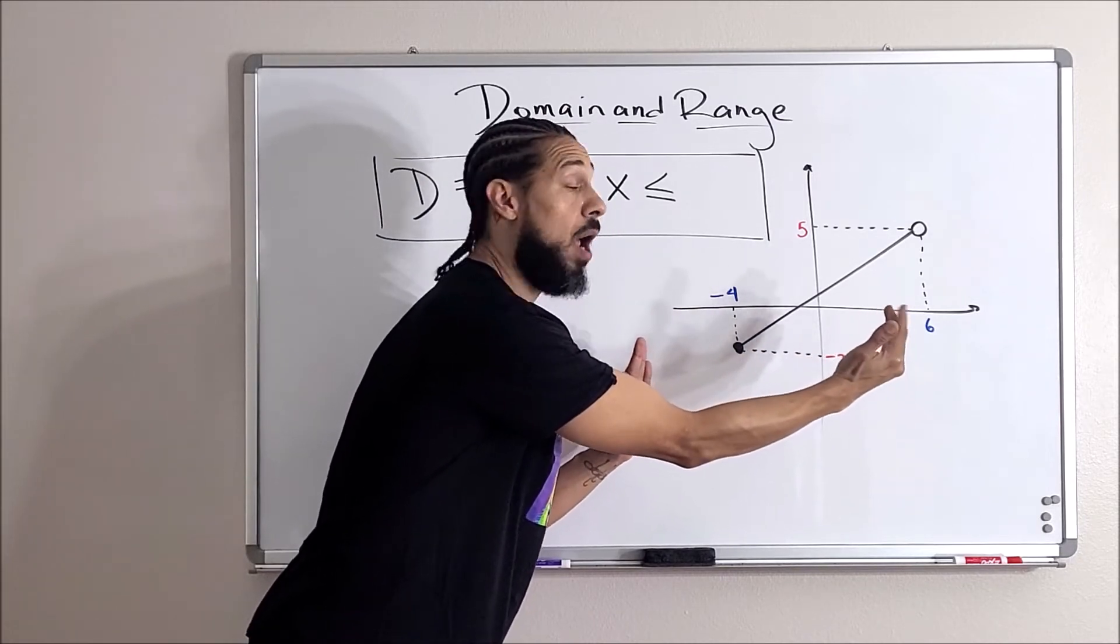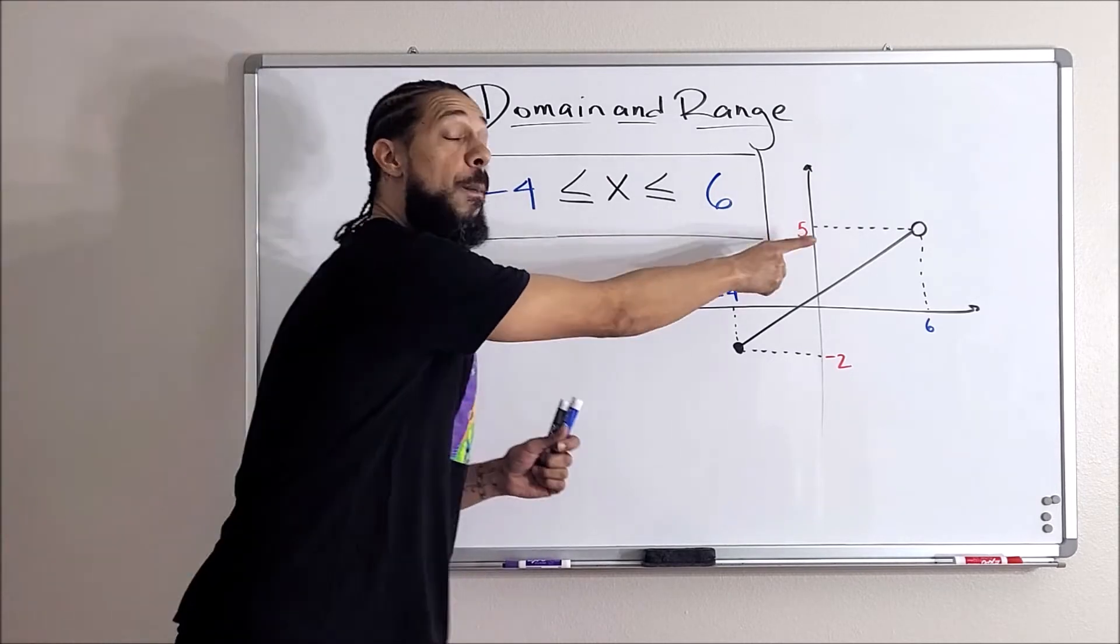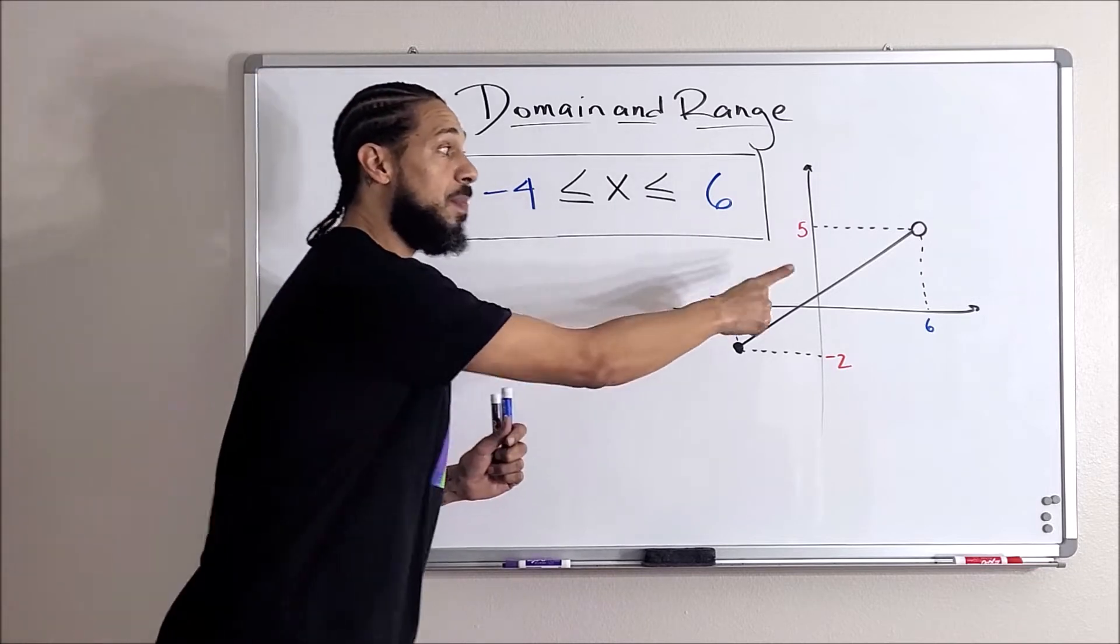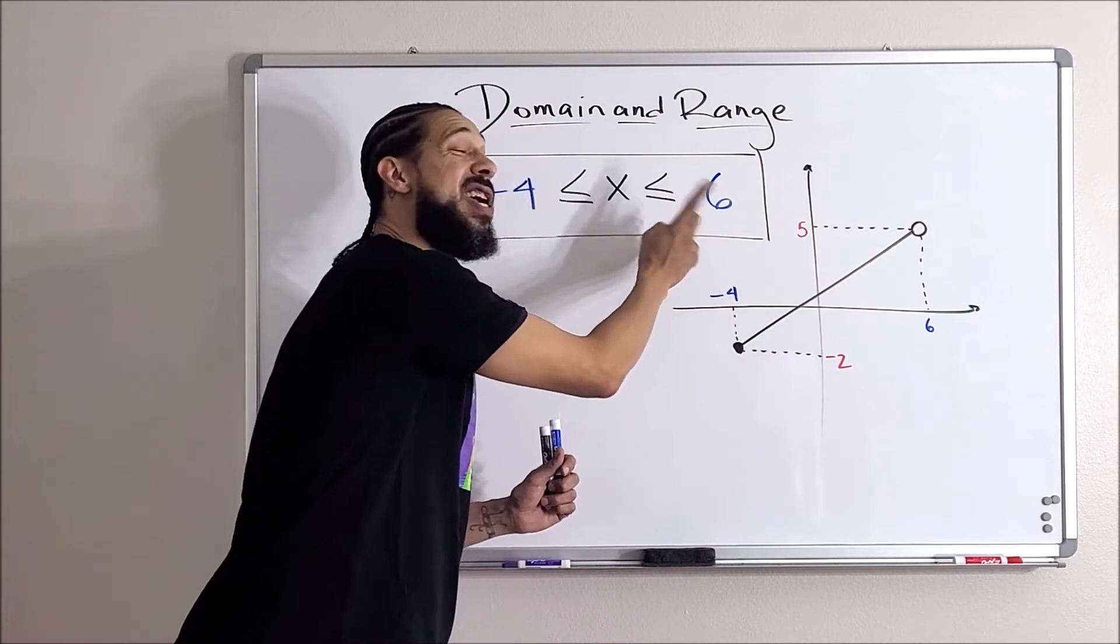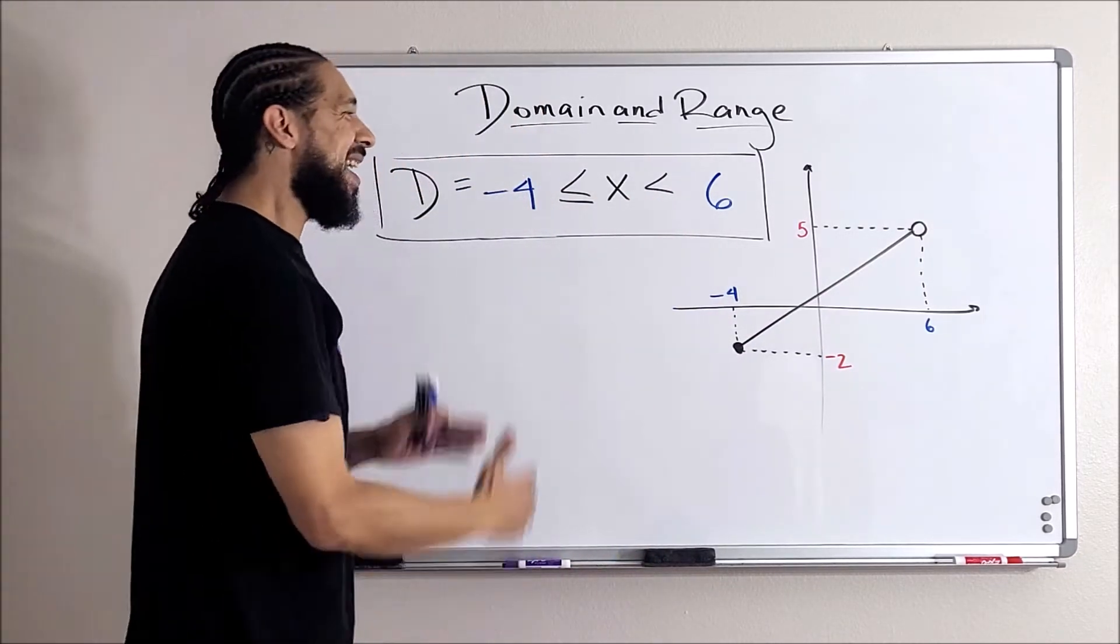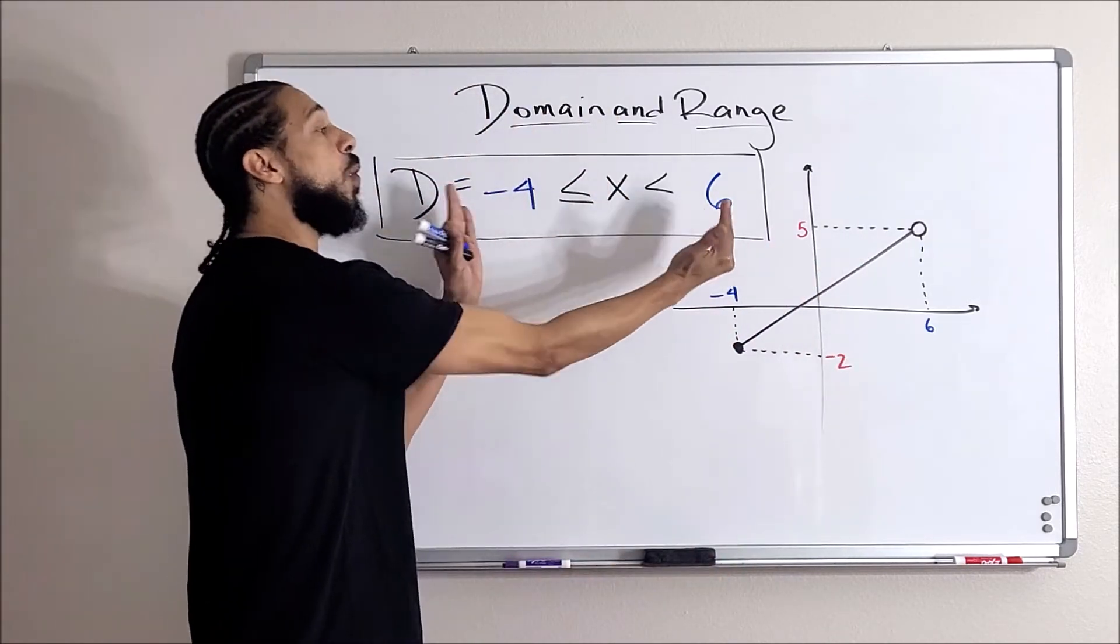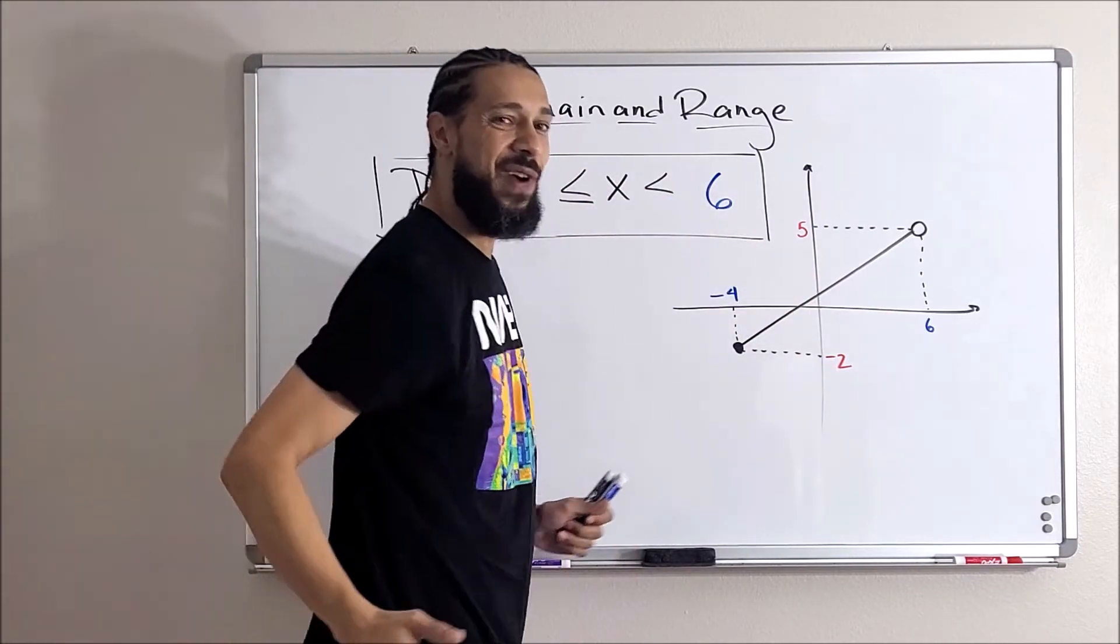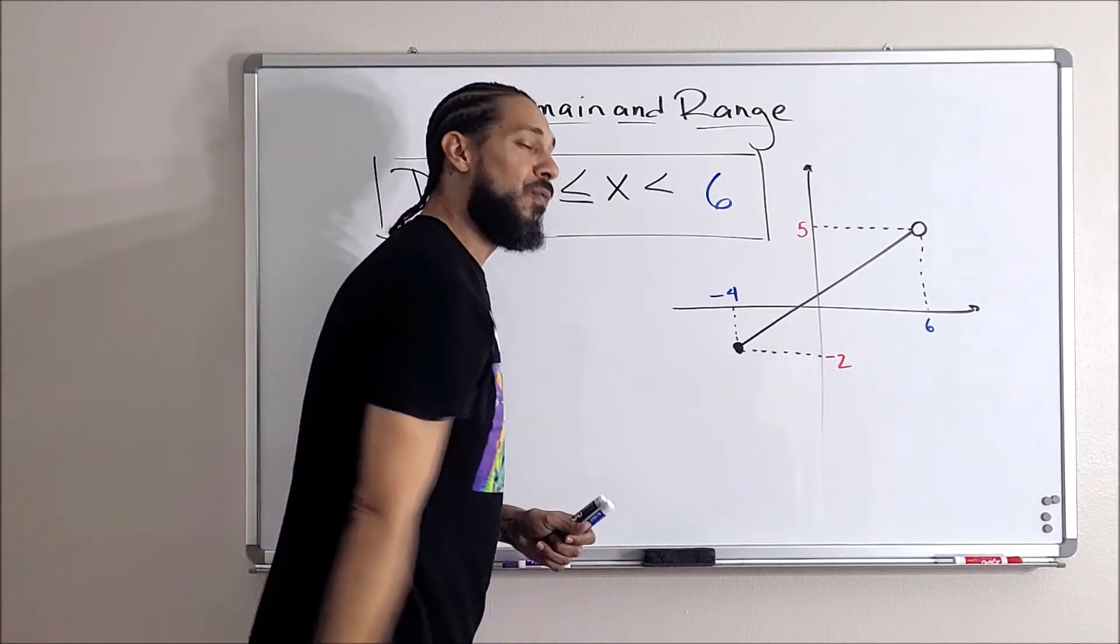Now this open circle means something the same it did on that number line for compound inequalities. What this means is it goes all the way up to six but it does not include six, so we got to get rid of that equal sign. And now the domain of this graph, all of the x values represented by this graph are in between these two values. My entire graph is in between those two values and that's the domain. That's the collection of x values represented by that line.